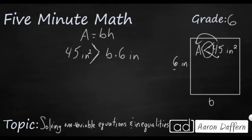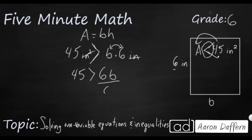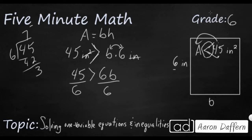Whenever you flip inequalities, you're going to have to flip the sign. Let's clean this up: 45 is greater than 6B, using the commutative property to switch the terms. Now we're going to use the division property of equality to divide both sides by 6. So 45 divided by 6 is going to be 7 and 3/6, or 7 and a half — 7.5 — which is greater than B.